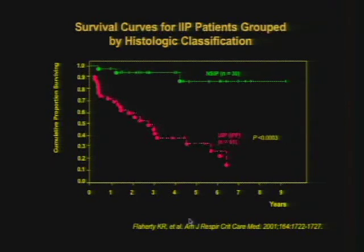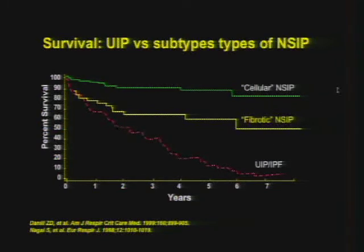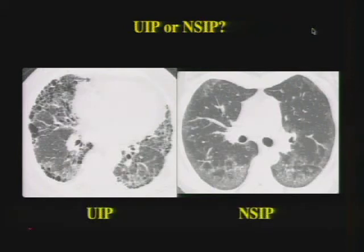Comparing survival of patients with UIP, which drops off very quickly, to those with NSIP — patients with NSIP do a lot better. Breaking down NSIP into cellular and fibrotic forms, fibrotic NSIP is somewhere between cellular NSIP and UIP-IPF in prognosis. By now you should be able to make the distinction between UIP and NSIP — if you see a case on a test in the future, this is what they will look like.